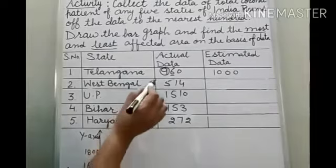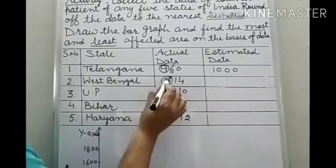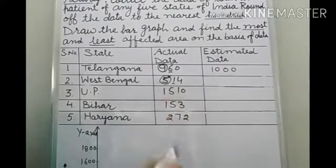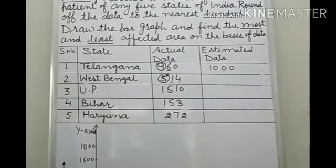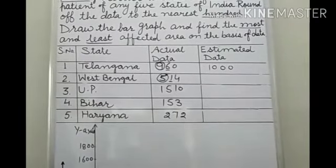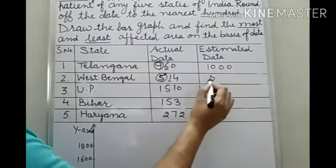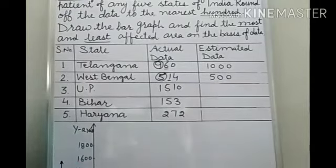In same way, you have to do the here. You just encircle the digit at 100 place. Now just see this digit. Here at tenth place, it is 1. And 1 is less than 5. So this digit will remain same, 5 as it is, and other two will become 0.